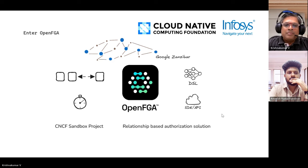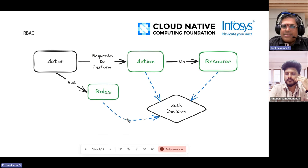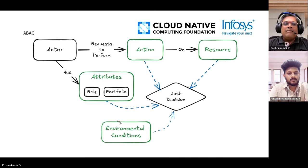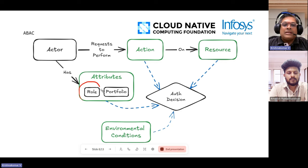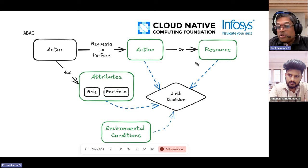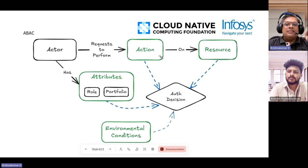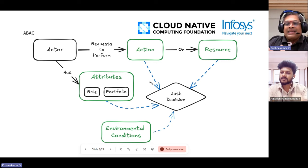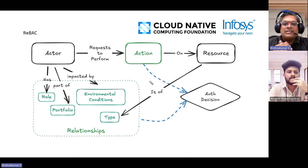That is where the fit between OpenFGA and the Backstage permissions framework became something we wanted to explore. Getting into some basic concepts quickly: RBAC takes into account roles, action, and maybe the resource. ABAC — attribute-based access control — basically treats role as just one attribute of the actor, giving you the ability to define more fine-grained attributes such as portfolio, and similarly you can define resource attributes to bring into your authorization decision.